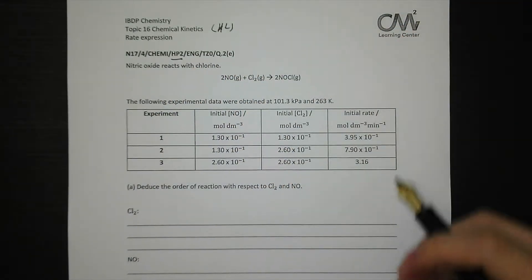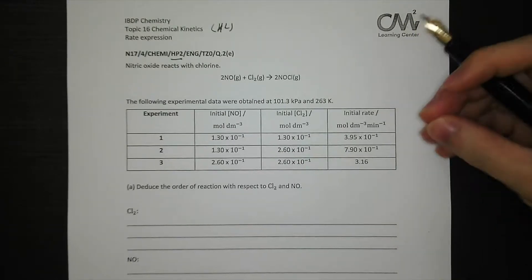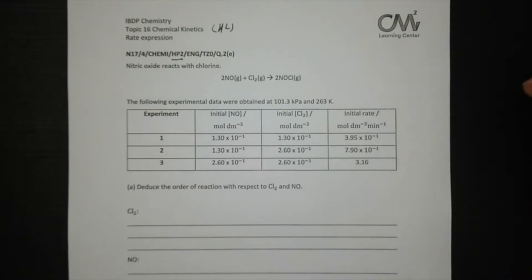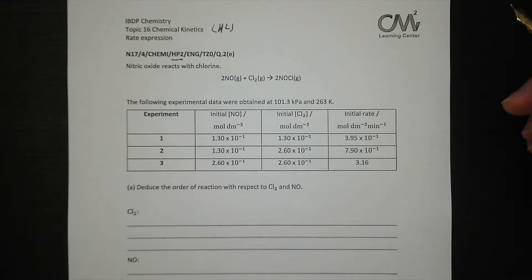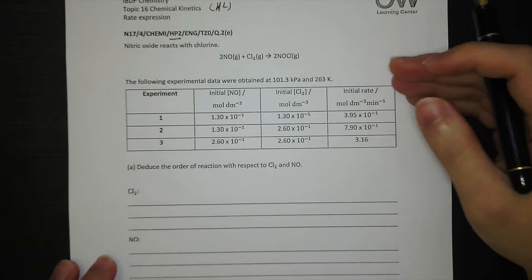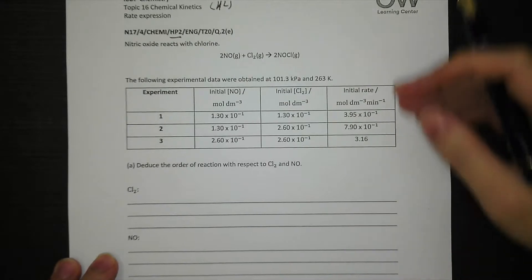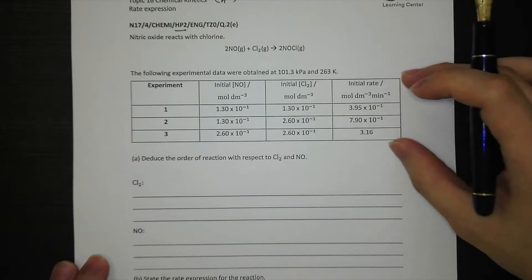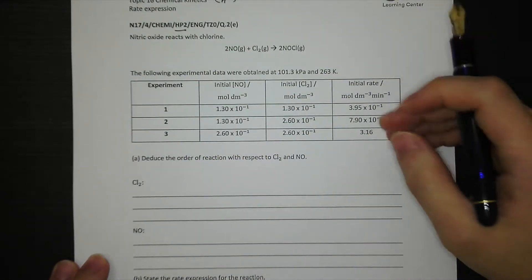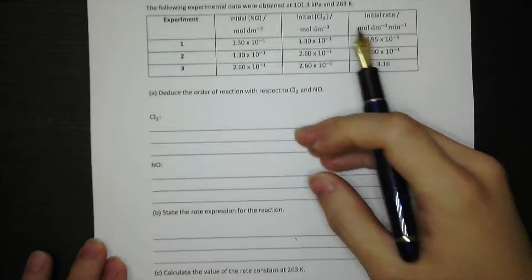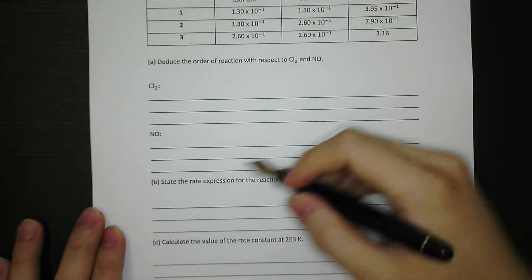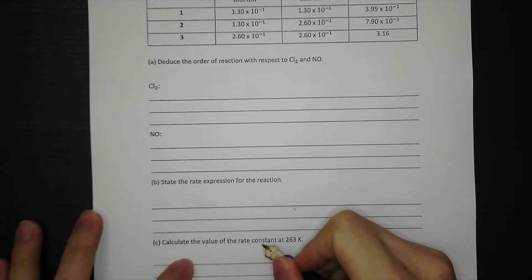This is a very common IB exam question type for topic 16 chemical kinetics. You will definitely see it in every year's past papers, either paper 1 or paper 2. The question types are pretty much the same or very similar. They give you a table showing experimental results for different sets of experiments, and the questions ask you to find the order for each reactant, the rate expression, and the rate constant k values.